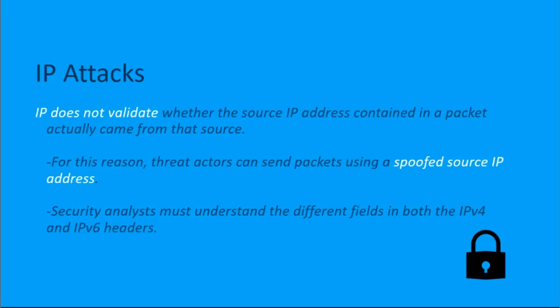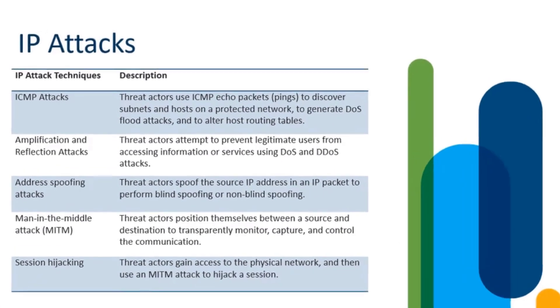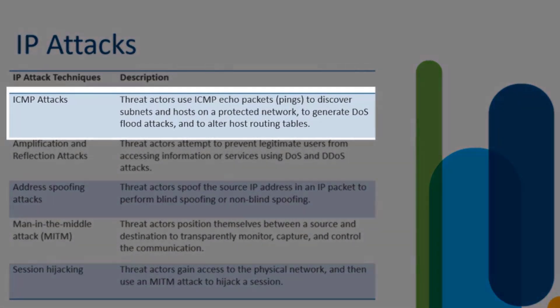Security analysts must understand the different fields that exist in both IPv4 and IPv6 headers. Let's dive deeper into IPv4 and IPv6 attacks, starting with ICMP attacks. Threat actors use ICMP messages — the echo packets with pings — to discover subnets and hosts on networks. They can also use ICMP attacks to generate denial of service floods.